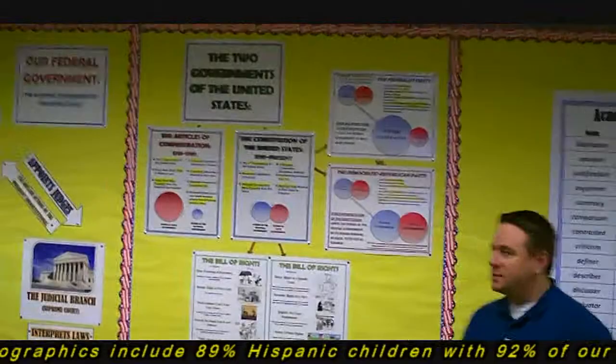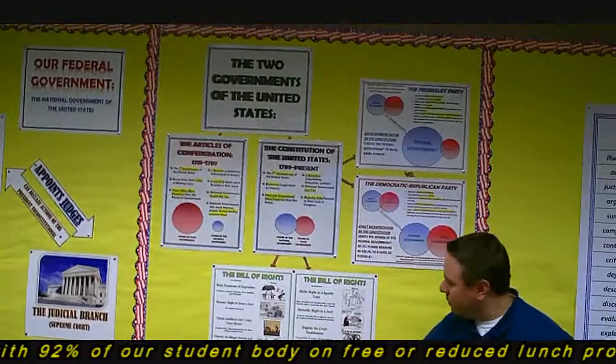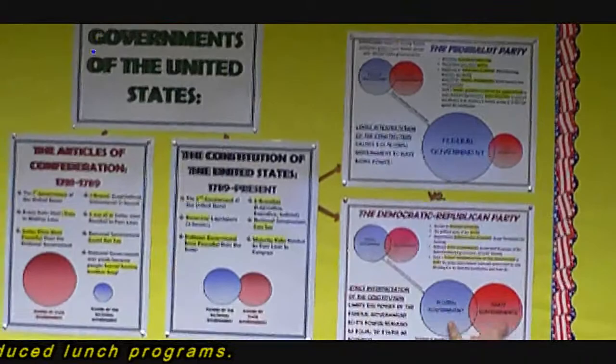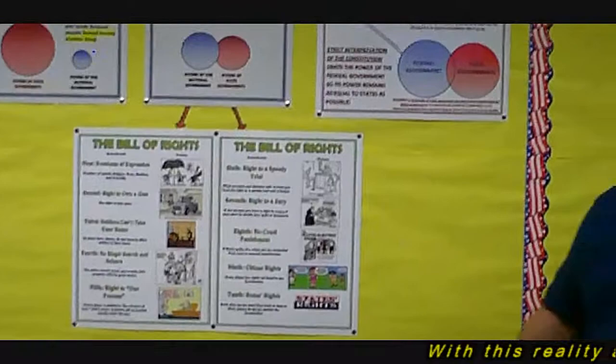This covers one of our units, which is the governments, Bill of Rights, how a bill becomes a law, and the first political parties. Also notice that I have color-coded the two different types of government we talk about, federal and state, so students can see the differences between the two.